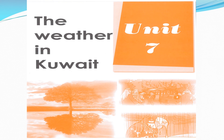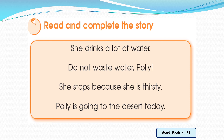Now let's go to our workbook. Open your workbook, page 31. Read and complete the story. The sentences are: Polly is going to the desert today. She stops because she's thirsty. She drinks a lot of water. Don't waste water, Polly.